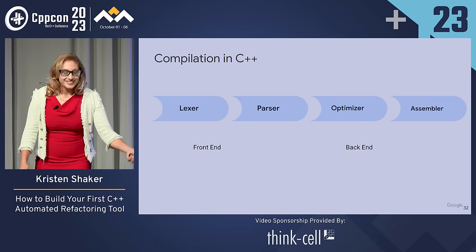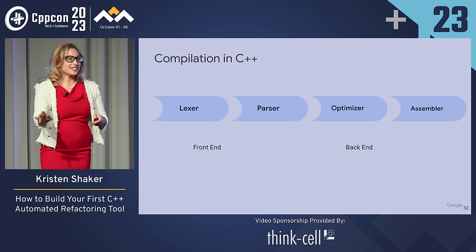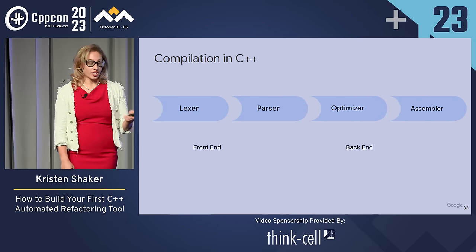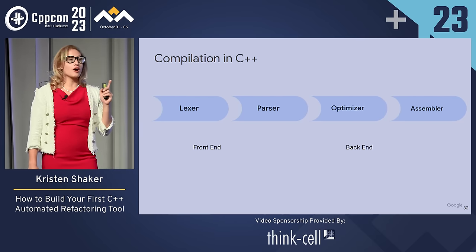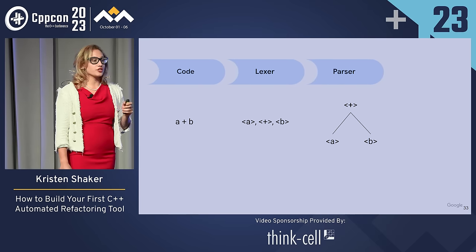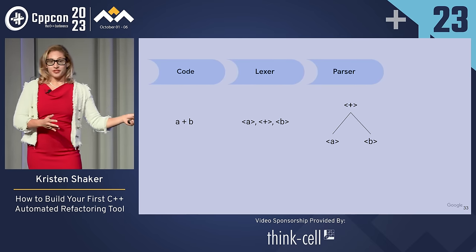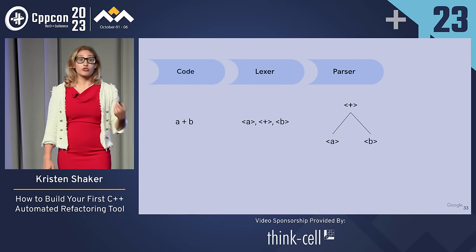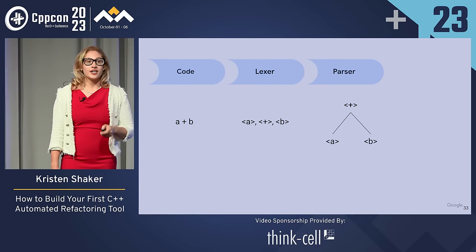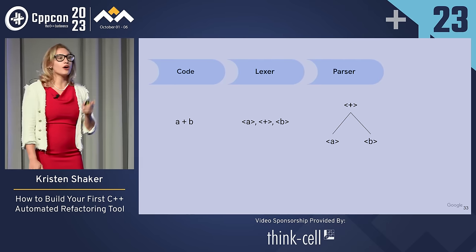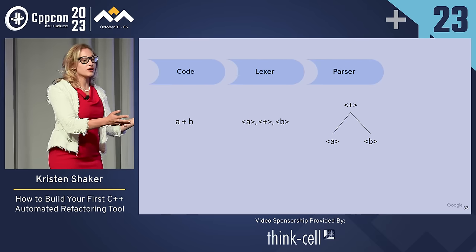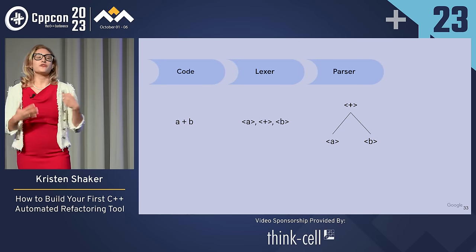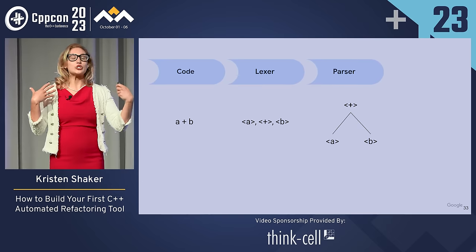If you were working on an under-the-hood compiler optimization — speeding up your code without actually changing it — you would be working in the optimizer. But we are interested in textually transforming our code, so we are concerned with the front end. You start with some code, say A plus B. That code is consumed by the lexer, which produces a stream of tokens. That token stream is consumed by the parser, which generates a semantic tree telling us how our tokens relate to each other programmatically. You can see we went from a code snippet to an information-rich data structure telling us we have a binary operator with operands A and B.